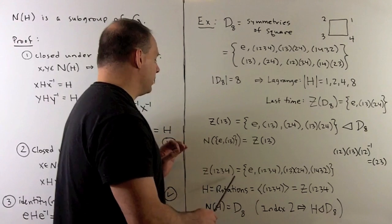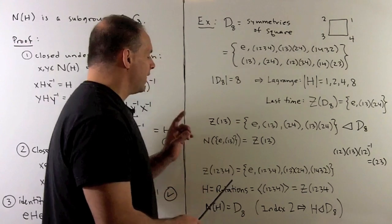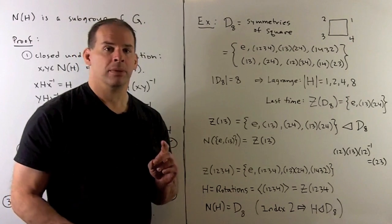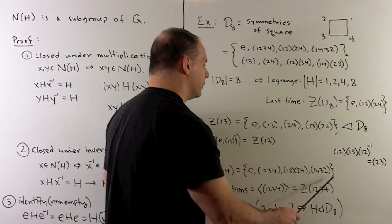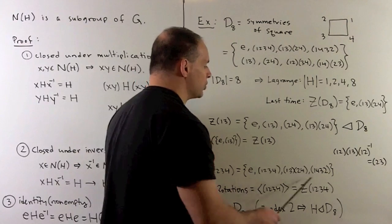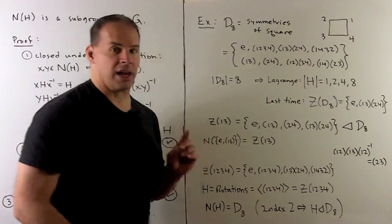If we try to put any more elements in there, that would mean (1,2,3,4) is in the center. We know that doesn't happen, so we stop here. Again, this is going to be a normal subgroup in D8 by the index two theorem.